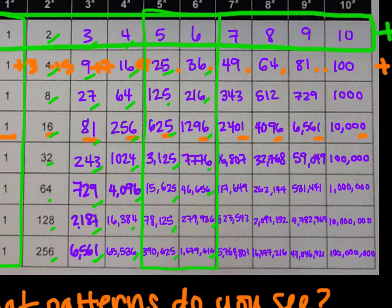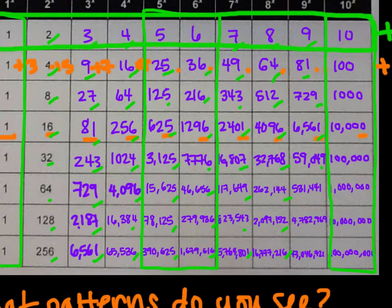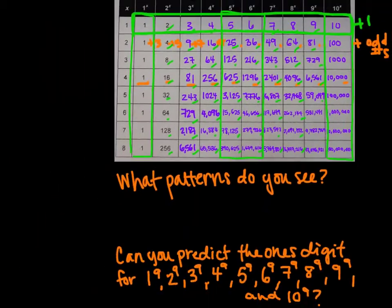For base 7, the ones digits cycle as 7, 9, 3, 1, repeating. For base 8, they go 8, 4, 2, 6, repeating. For base 9, they alternate 9, 1, 9, 1. For base 10, it always ends in 0 because 10 times anything is a power of 10 and ends with 0. So we've got some cool patterns going on.